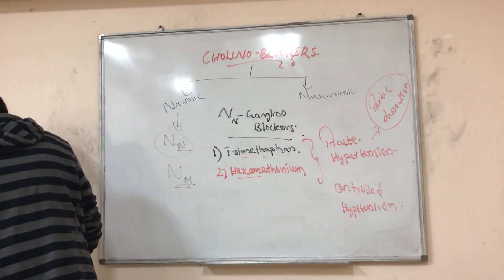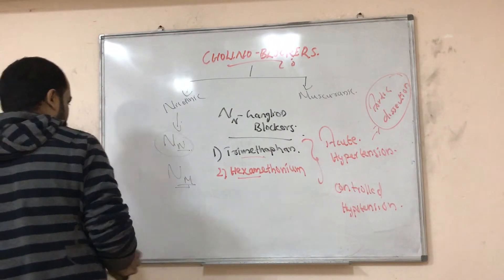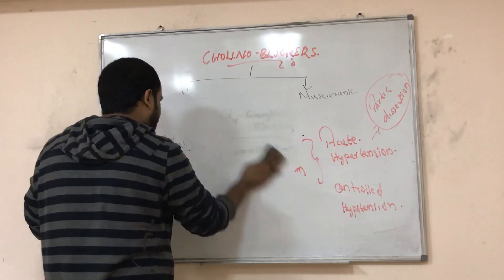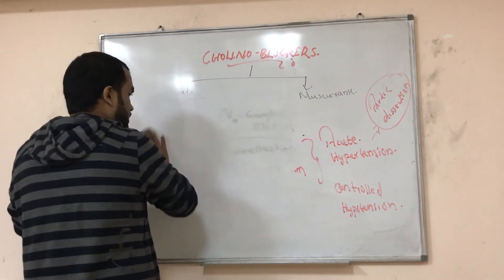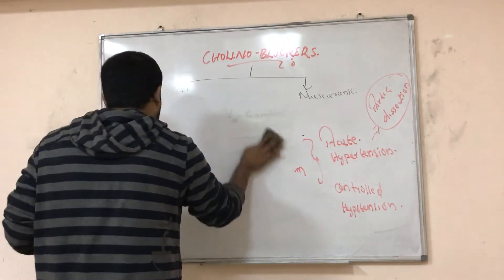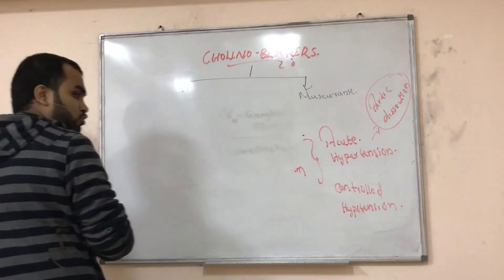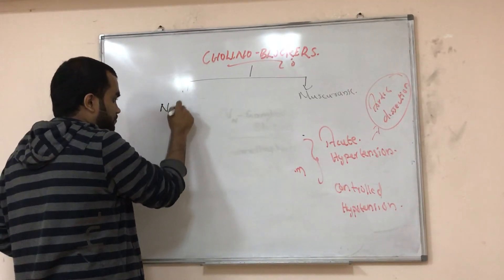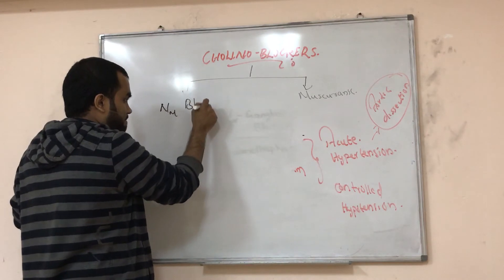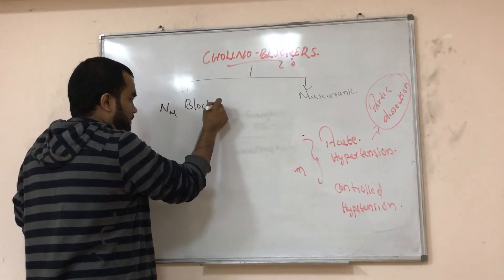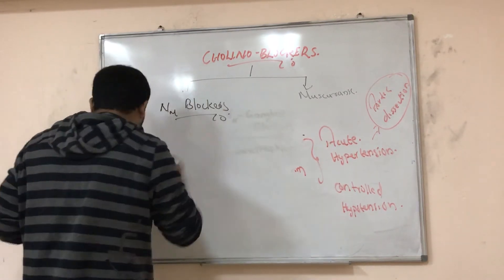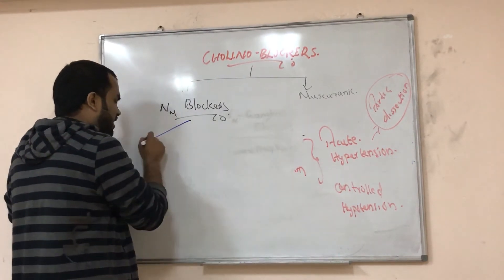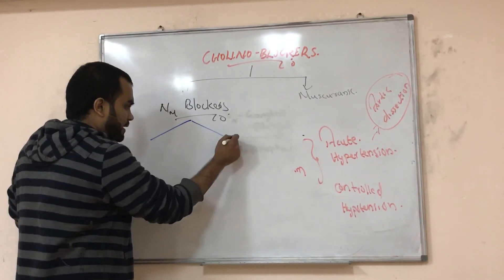Now we will study about NM blockers — NM means neuromuscular blockers, also called neuromuscular junction blockers. You can divide these drugs into two types: depolarizing and non-depolarizing.